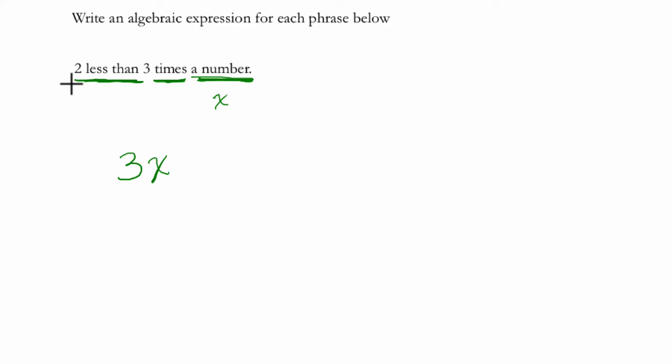We're finding two less than that. So I like to think, if we're starting at three times a number, then we find two less than that, it would be 3x minus 2.